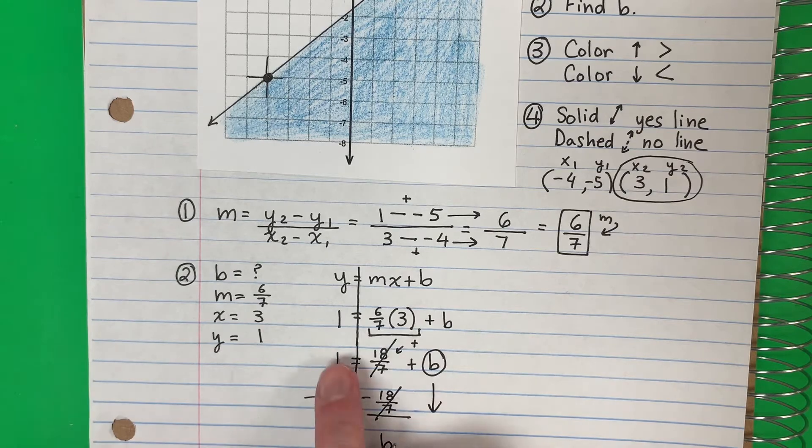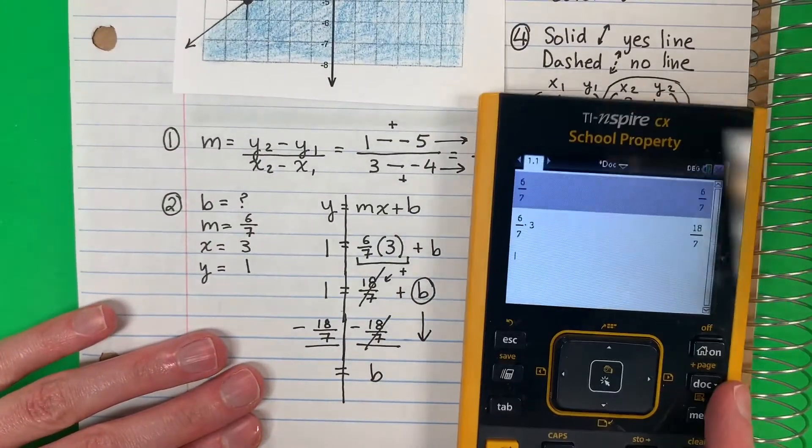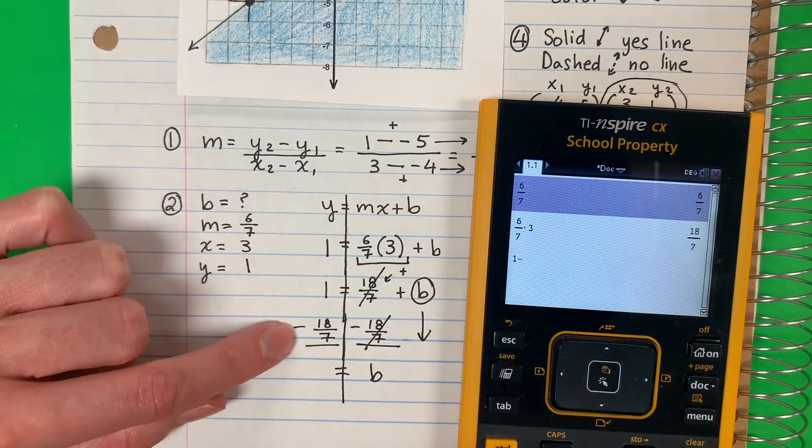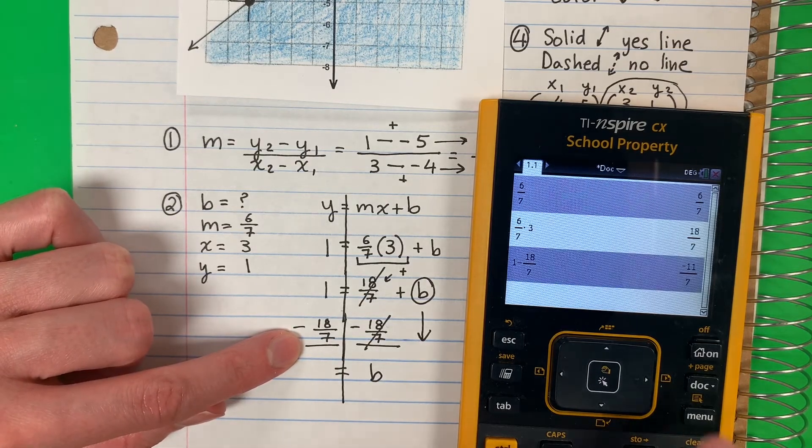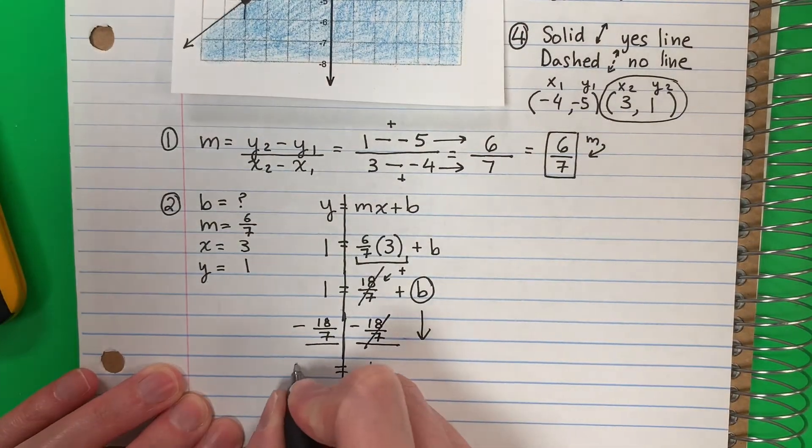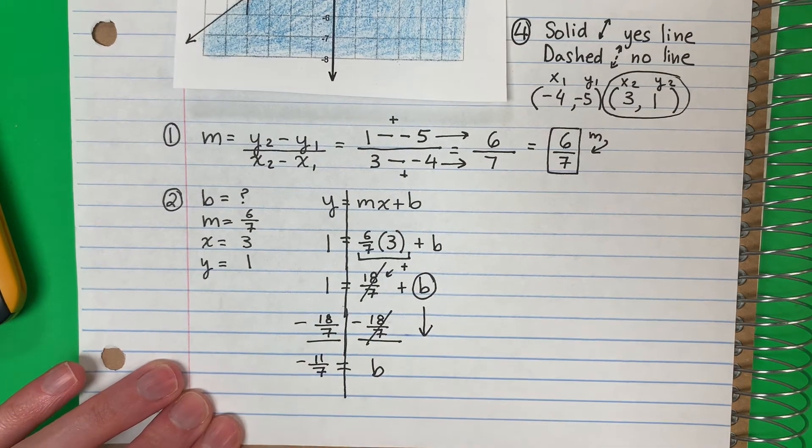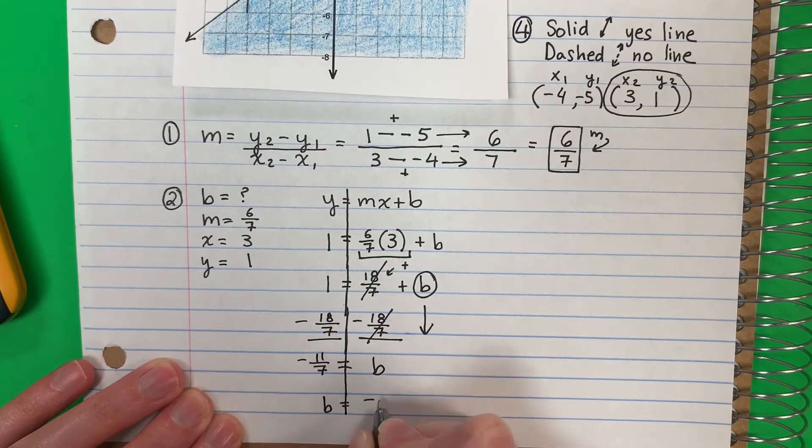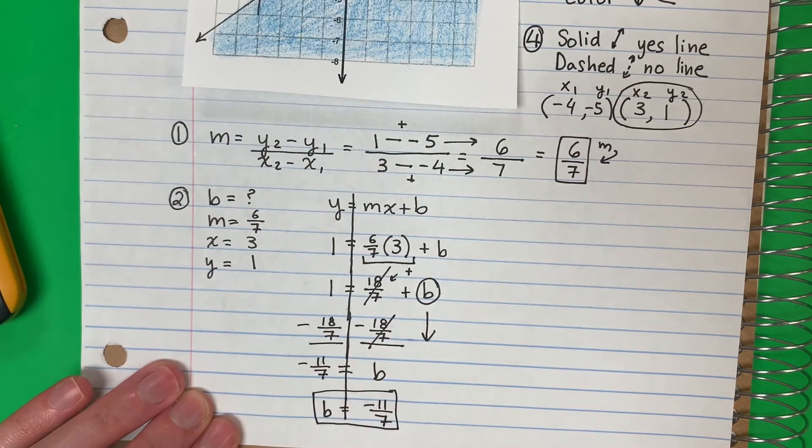b equals, and I will put in the calculator 1 minus eighteen sevenths. And I get negative eleven sevenths. I'm going to go ahead and switch because I want the letter in the front. So b equals negative eleven sevenths. That is my b. Part three.